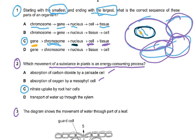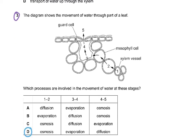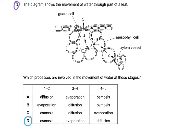Question 3: The diagram shows the movement of water through part of a leaf. Guard cell at five, one is the xylem vessel, then coming out of the xylem vessel into cell two, then to the surface of the cell, which is a sub-stomatal airspace, and then four into the space and then five out of it.